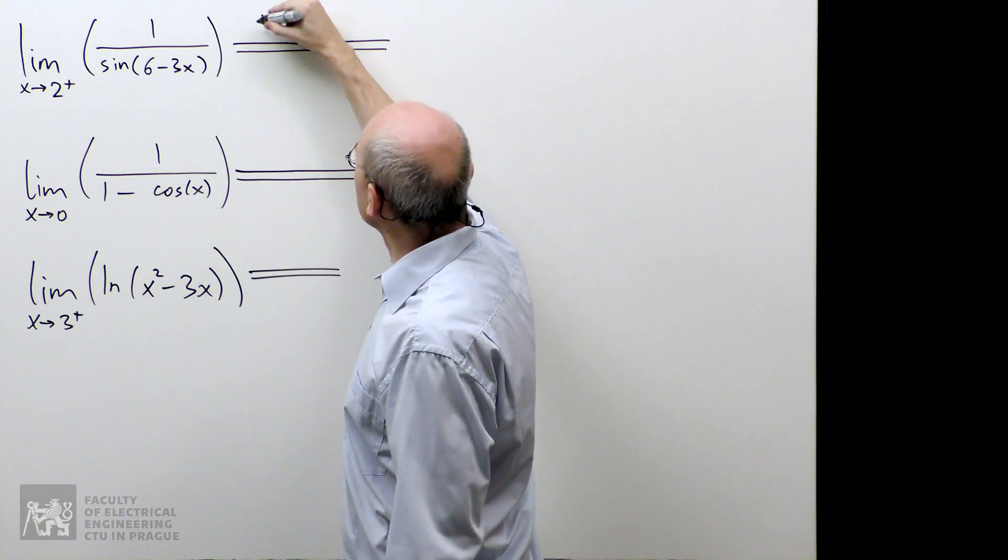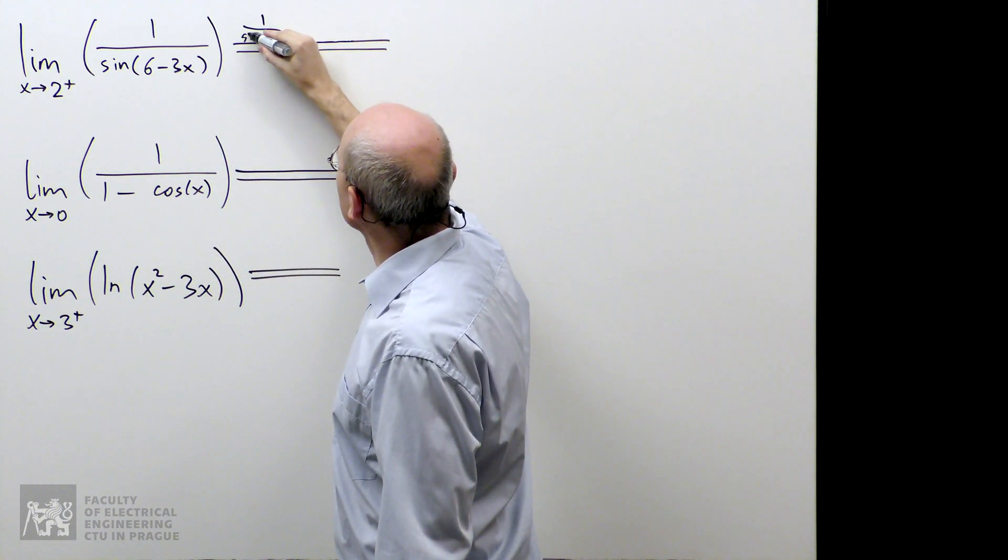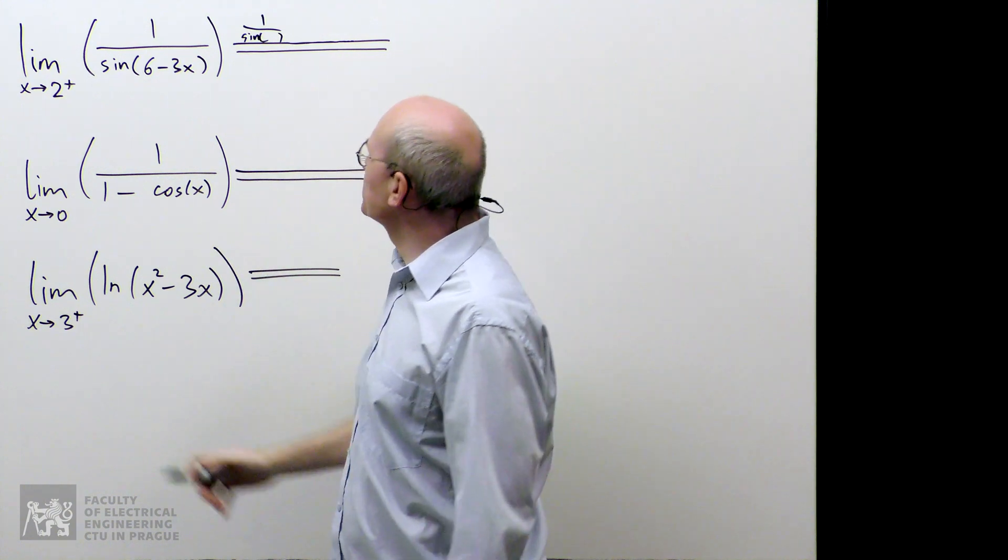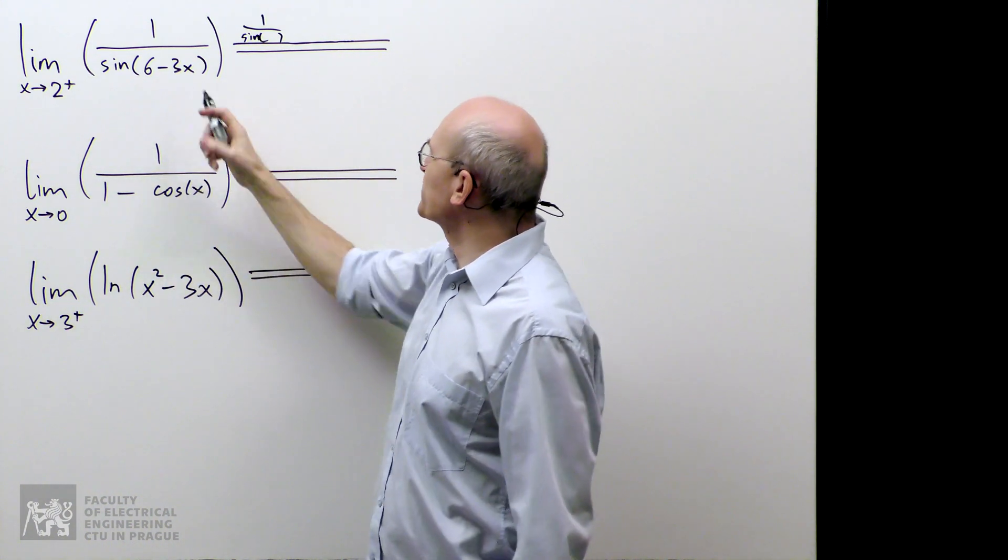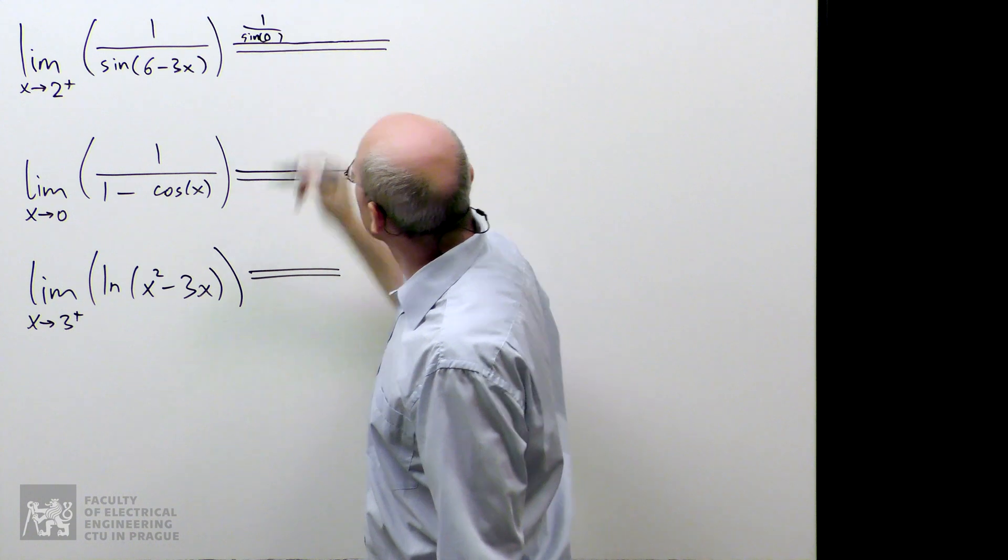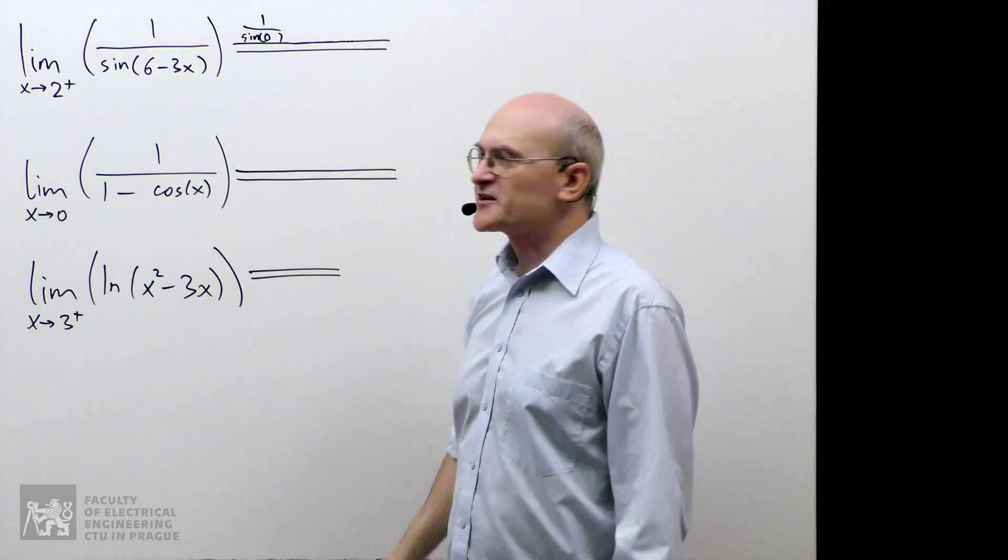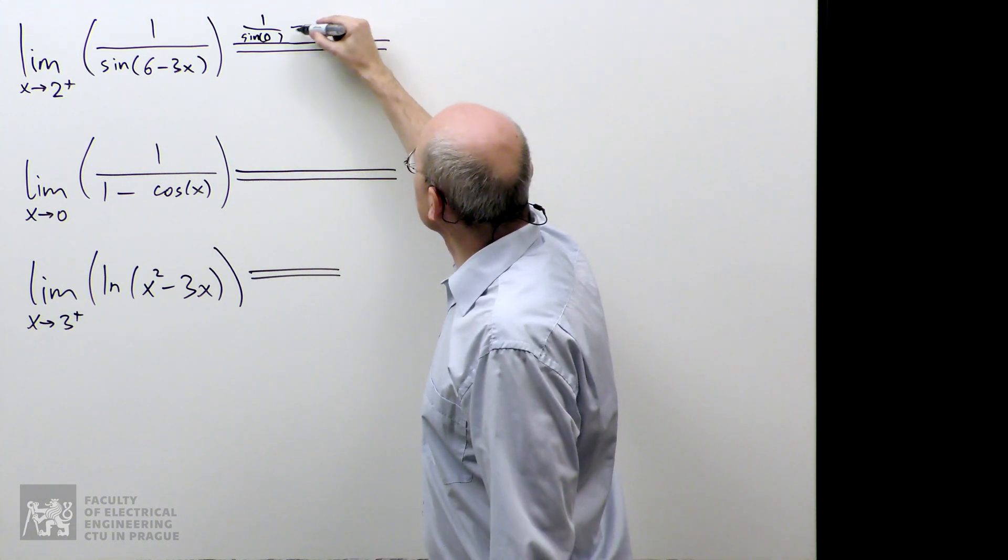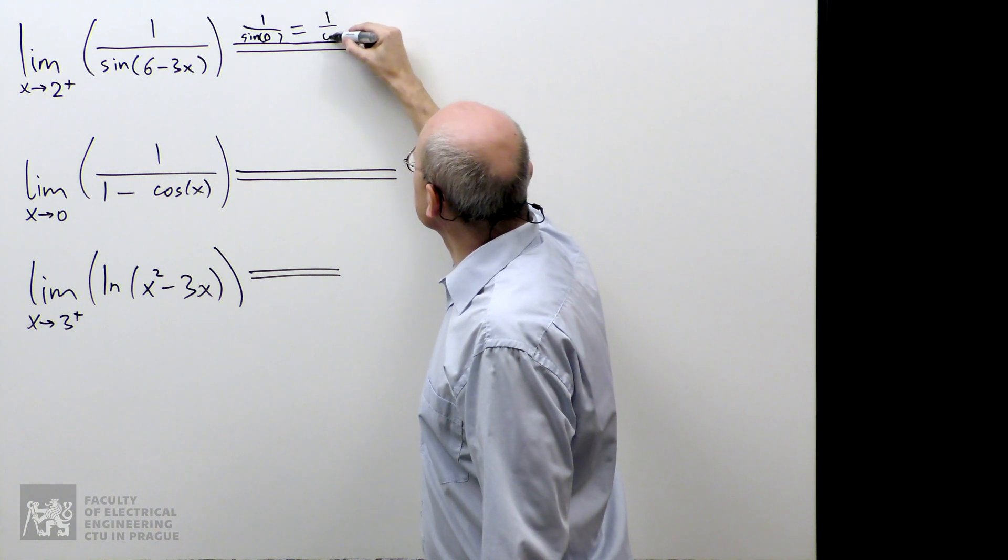We get 1 over sine, and when we take 2 and put it here for x, we get 6 minus 6, which is 0. So it's 1 divided by sine of 0. And sine of 0 is 0.